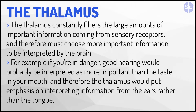The thalamus constantly filters the large amounts of information coming from sensory receptors, and therefore must choose the more important information to be interpreted by the brain. For example, if you're in danger, good hearing would probably be interpreted as more important than the taste in your mouth, and therefore the thalamus would put an emphasis on interpreting information from the ears rather than the tongue.